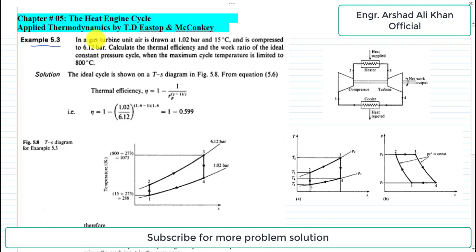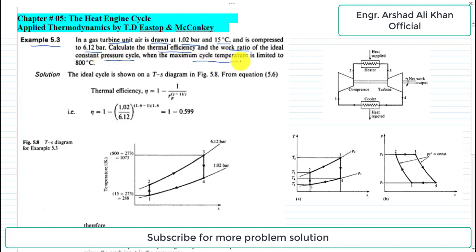The statement of example 5.3 is: in a gas turbine unit, air is drawn at 1.02 bar and 15 degrees centigrade and is compressed to 6.12 bar. Calculate the thermal efficiency and the work ratio of the ideal constant pressure cycle.